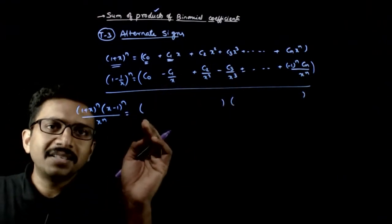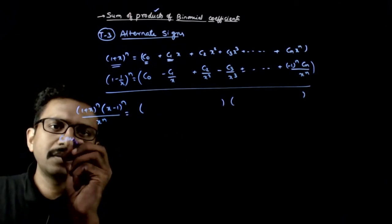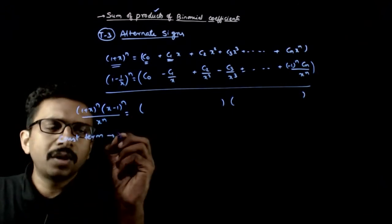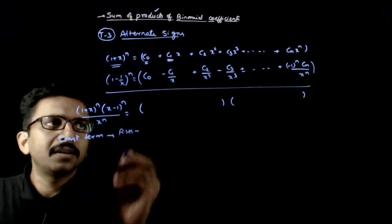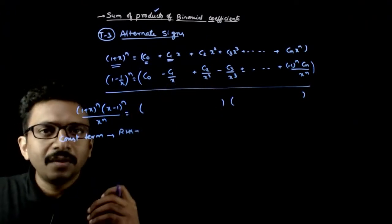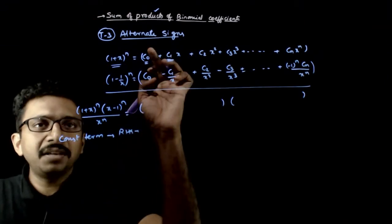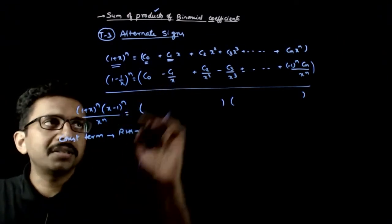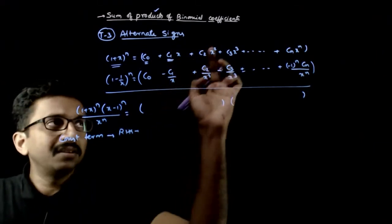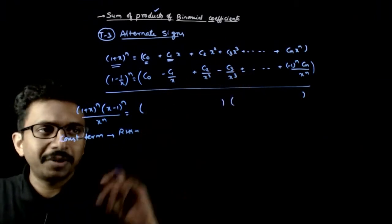Now let us consider the constant term on the RHS. The RHS is the multiplication of these two expressions. When you multiply them, the constant term comes from: c0 times c0, then c1·x times minus c1/x, then c2·x² times c2/x², then c3·x³ times c3/x³, and so on.